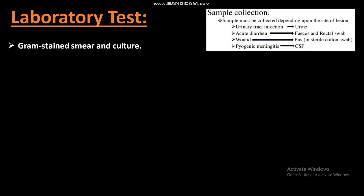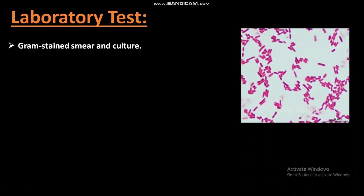Laboratory testing used to diagnose E. coli bacteria: gram stain, smear, and culture. The gram staining procedure is done to identify E. coli bacteria. First, the sample is collected from the patient — if the patient has urinary tract infection, a urine sample is taken; if the patient has acute diarrhea, a feces or rectal swab sample is taken; if a wound is present, a sample is taken using a sterile cotton swab; and if the patient has meningitis, cerebrospinal fluid (CSF) is taken. The sample is then observed under the microscope, where E. coli bacteria appear pink and rod shaped.